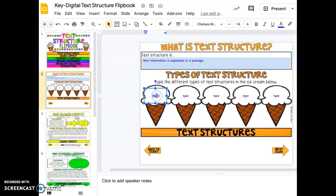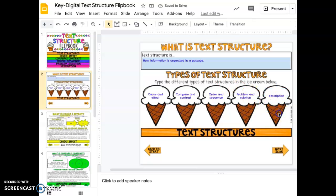There are five basic types of text structure, and the text structures we're going to be looking at today all revolve around ice cream. The first type is cause and effect. We're also going to be talking about compare and contrast, order and sequence, problem and solution, and description.